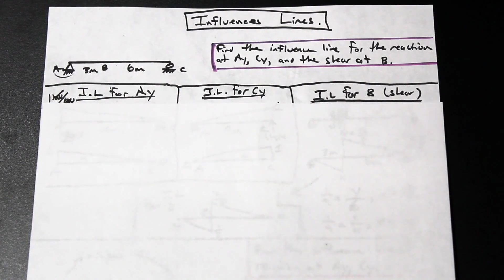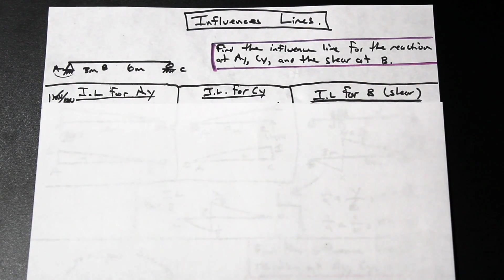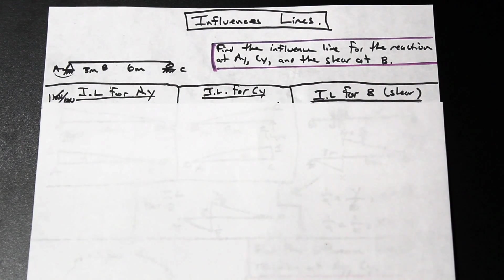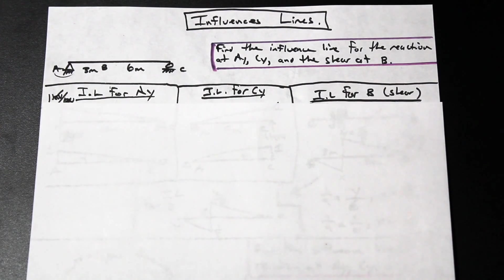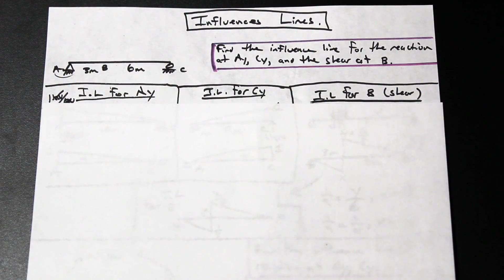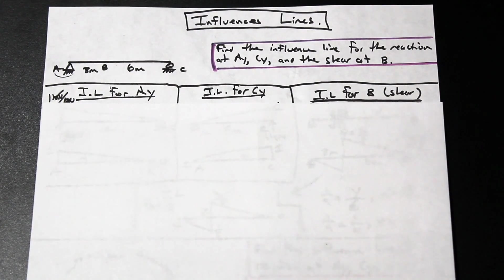I always found that the easiest way to do influence lines is the qualitative influence line method. This means releasing the point or support at which you want to find the influence line, looking at the deflected shape of that released structure. That deflected shape is the shape of the influence line, and from there you can use geometry.